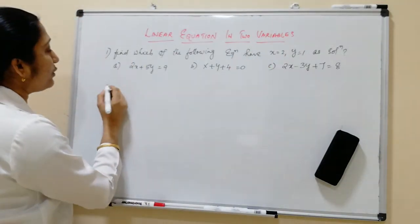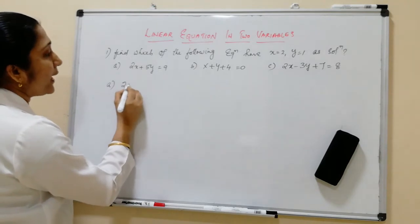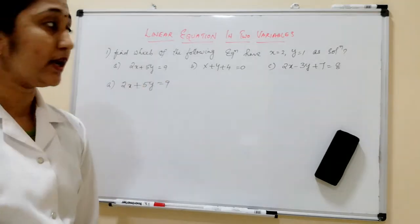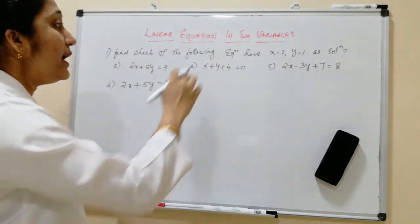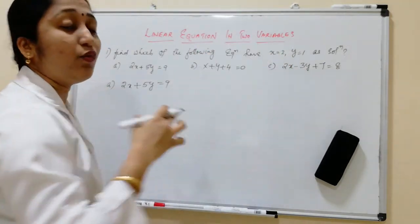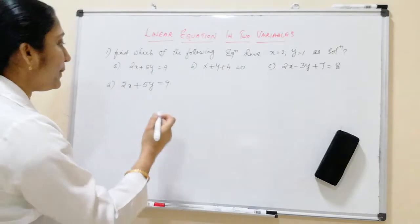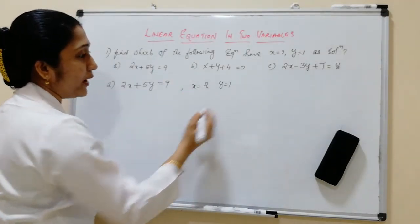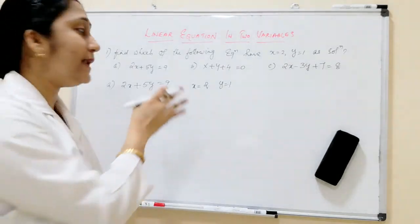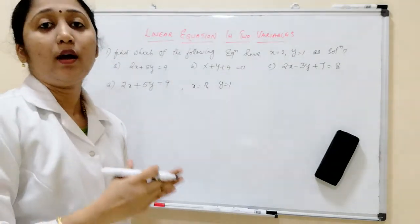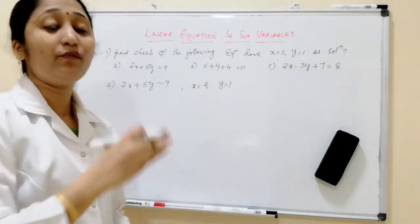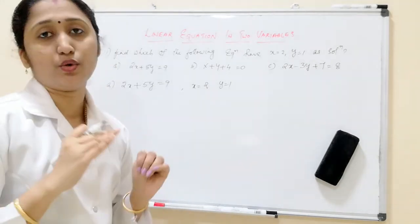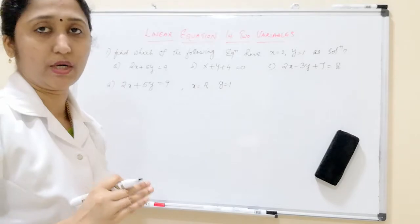First, let us take the first problem: 2X plus 5Y is equal to 9. We have to check whether X equal to 2 and Y equal to 1 is a solution or not. We substitute X equal to 2 and Y equal to 1 into the equation. If LHS equals RHS, it is a solution; otherwise it is not.